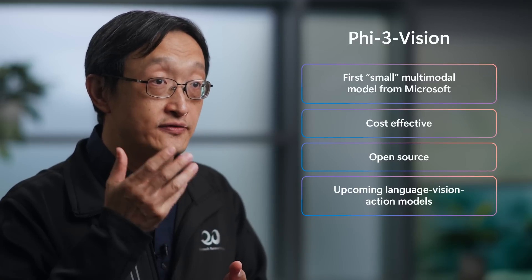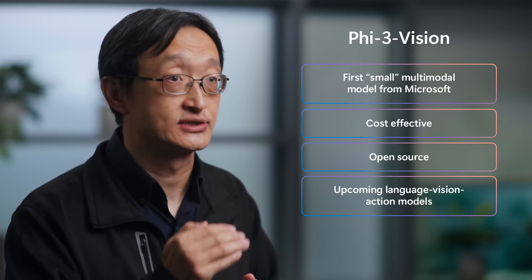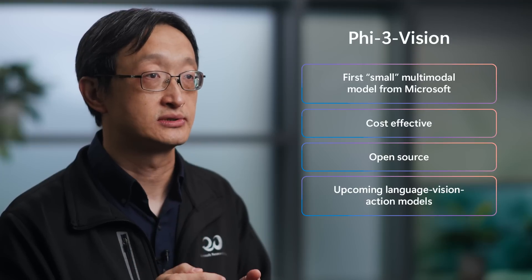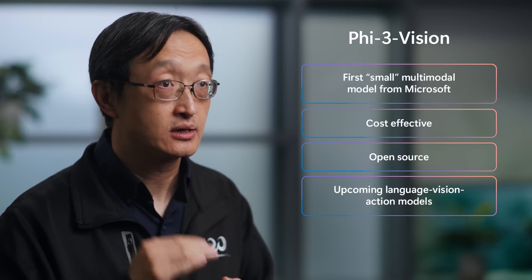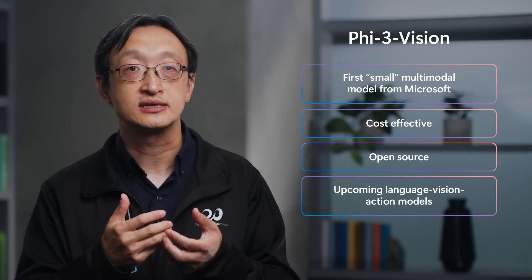Microsoft's mission is to empower every person and every organization on the planet to achieve more. If we want general AI to be truly globally equitable and reach everyone on the planet, we need to increase capacities while reducing costs. Given the popularity of models like GPT-4 and their adoption at massive scale, reducing costs is a very important part of achieving this mission. Phi-3 Vision is the first multimodal model in the Phi small model family. It matches and sometimes exceeds some of the capabilities of much larger models such as GPT-4V, at a much lower cost, and we have released the model weights into the open-source community.